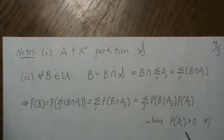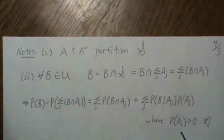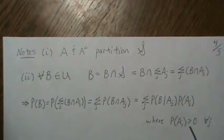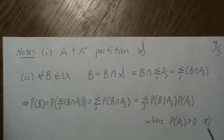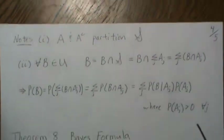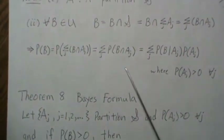This holds for all j where the probability of A_j is greater than zero. This result — the law of total probability — leads directly into the next theorem: Bayes' theorem.